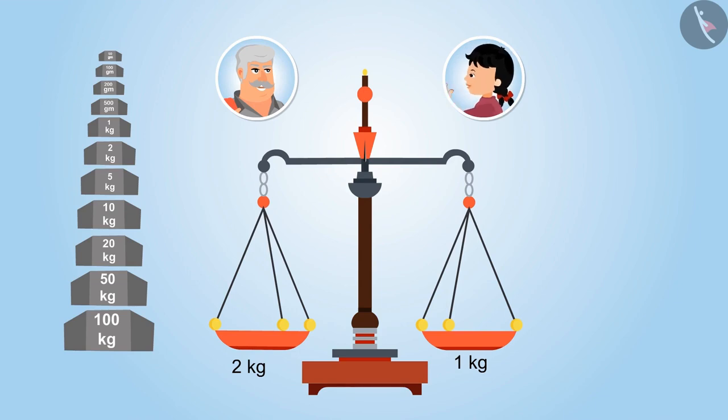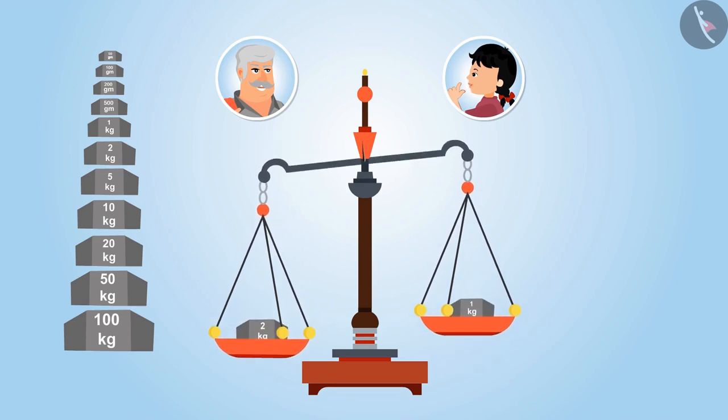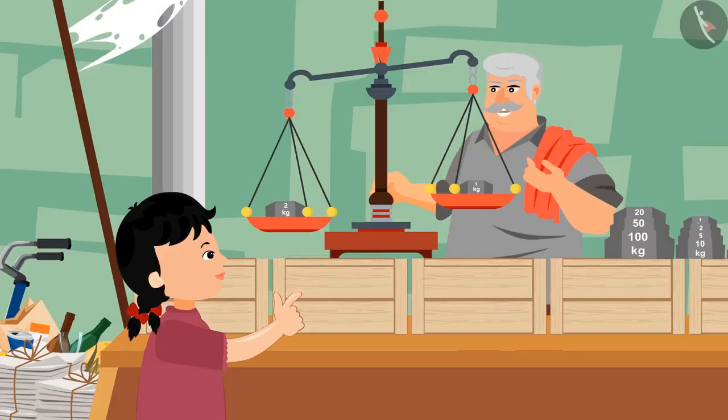This means in this case of 1 kg and 2 kg weighing stones, the side carrying 1 kg will move upwards, because it is lighter than the other. Exactly. Now you have learnt it properly.